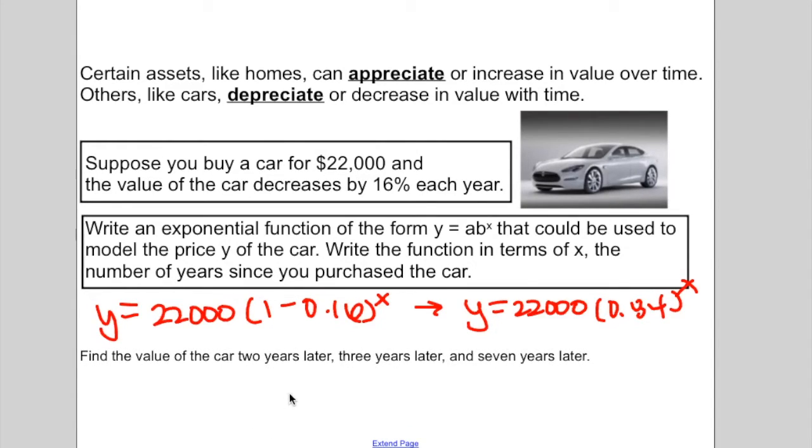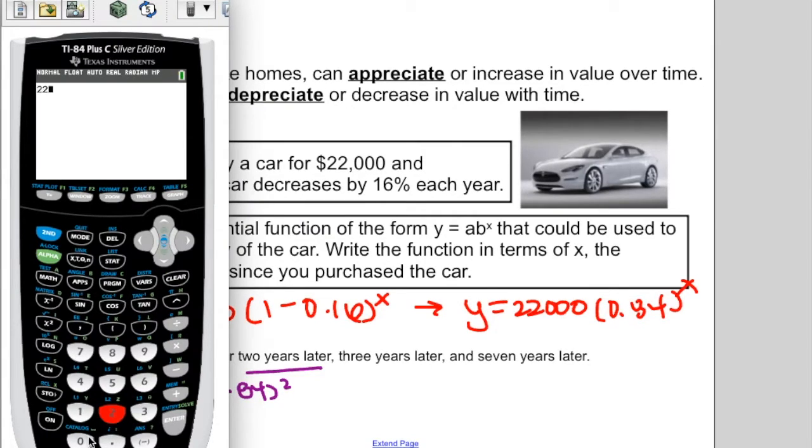It says find the value of the car 2 years later. Well if I want to figure out 2 years later, x is my number of years, so I'm going to plug in 2. So for 2 years later, we'll have y equals 22,000 times 0.84 to the second. So remember this is a value of a car, so let's figure this out and round to two decimal places for money. So we have 22,000 times 0.84 to the second. So two years later, the value of the car is $15,523.20.